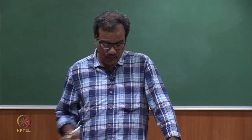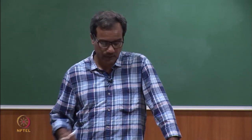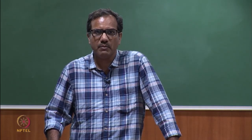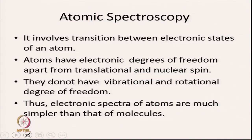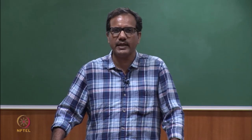Hello students, welcome to lecture 30. Today I am going to discuss about Atomic Spectroscopy. As the name suggests, atomic spectroscopy involves transition between electronic states of an atom. As you know, atoms have electronic degree of freedom apart from translational and nuclear spin, but they do not have vibrational and rotational degree of freedom. So electronic spectra of atoms are much simpler than that of the molecule.